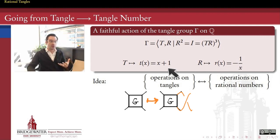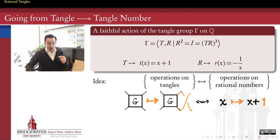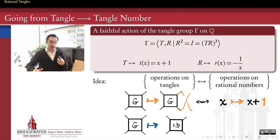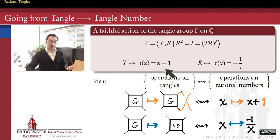Every different operation we can do to tangles is a different kind of operation on rational numbers, and vice versa. We did that by associating the twist operation t, which adds a twist on the right side of a tangle, with the arithmetic operation of addition by 1 — the function t(x) = x + 1 — and by associating the rotation by 90 degrees of a tangle with the operation of the opposite reciprocal. We spent our time figuring out how, knowing the geometry and abstract algebra of those operations, we could find functions on the rational numbers which faithfully reproduce those same relations.